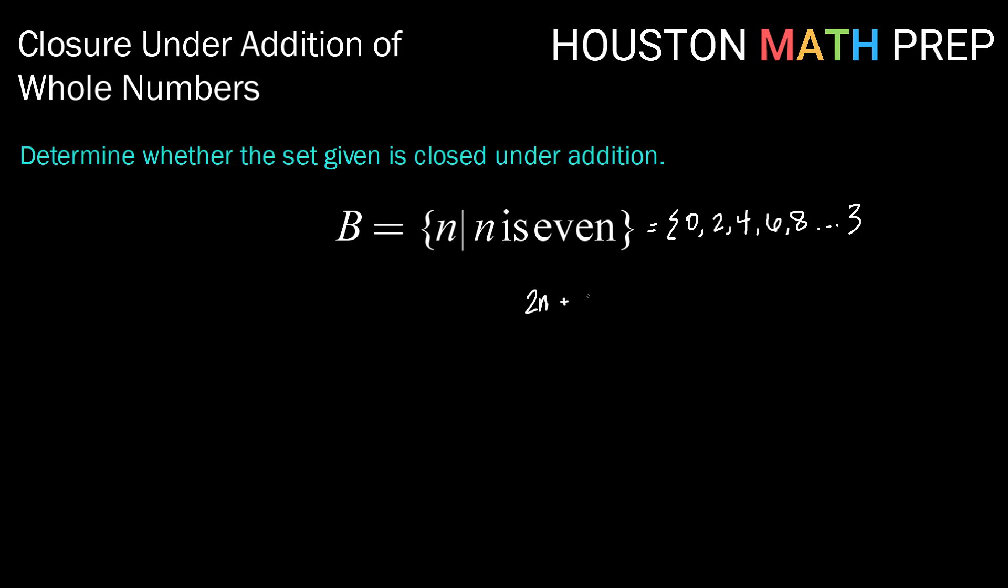And let's say I add to that some other even number, like 2M, right? That's divisible by 2. Well, then the sum there, if I factored out that 2, would be 2 times M plus N, which is also even because it is divisible by 2. So yes, the subset of even whole numbers is closed under addition.